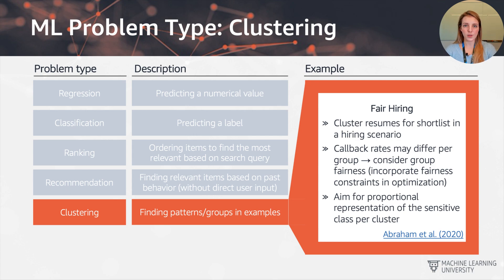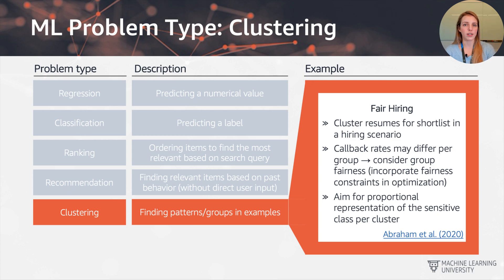The next example is clustering, which is about finding patterns or commonalities or similar characteristics in our data. A scenario where clustering might be used with bias implications is in hiring, where you might want to group skill or experience to sort resumes more quickly. What was found by Abraham et al. is that callback weights actually differed per group or per cluster. To mitigate this, we should aim for proportional representation of different sensitive demographic attributes per cluster.